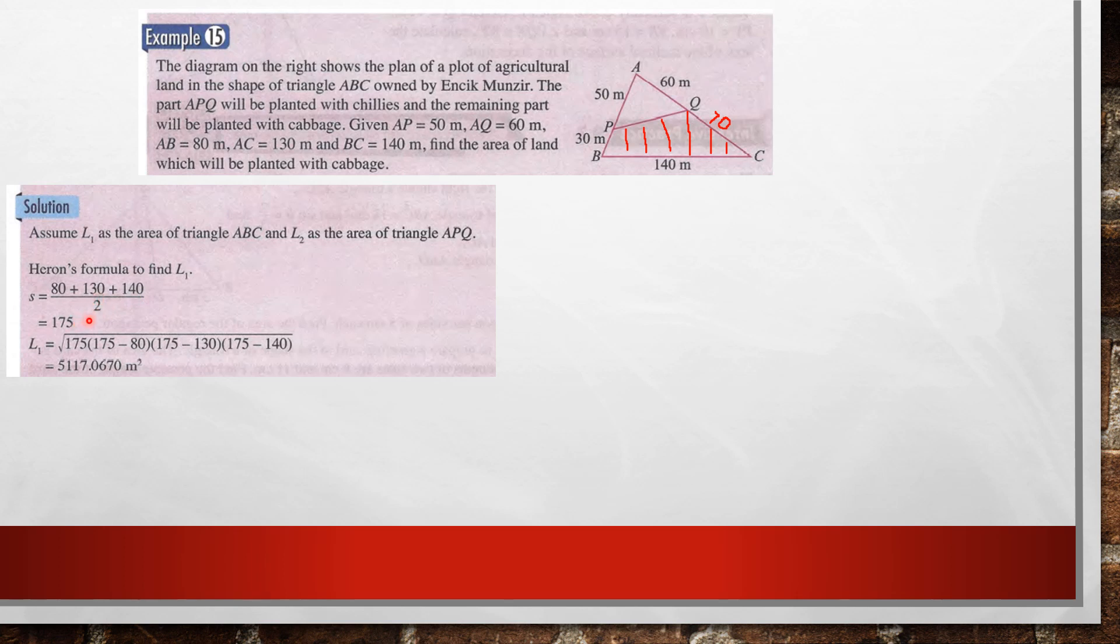So using Heron's formula, square root of 175 in bracket, 175 minus 80, 175 minus 130, multiply with 175 minus 140. So square root, you get 5,117.0670. So this is the area of the whole triangle ABC.